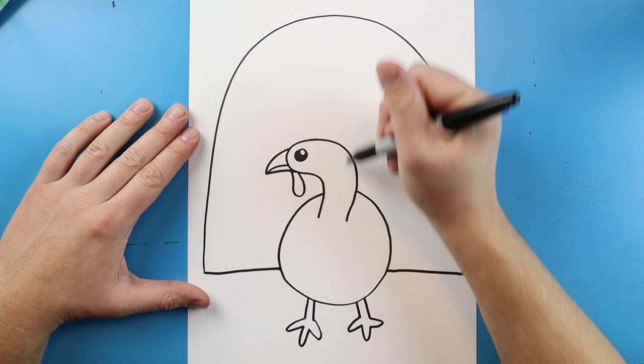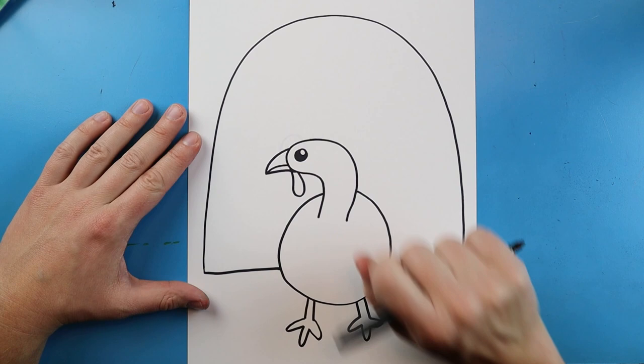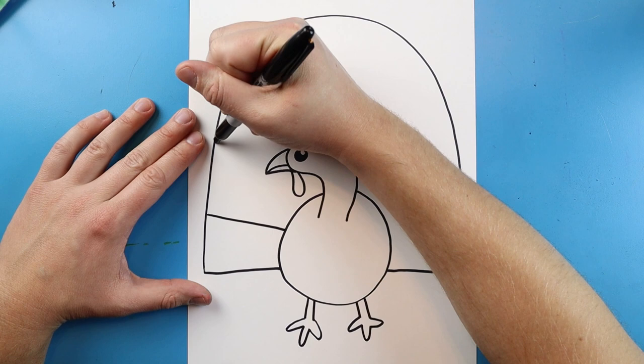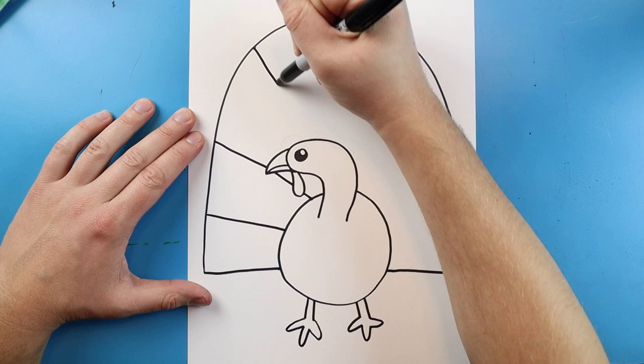Now I want to make some lines that go down to my turkey. If you want you can always put a little dot right here and use a ruler and kind of line up some lines. I'm just going to freehand this right now. And I'm just going to make some lines that go right down towards my turkey. I'm going to have to kind of jump over some areas.